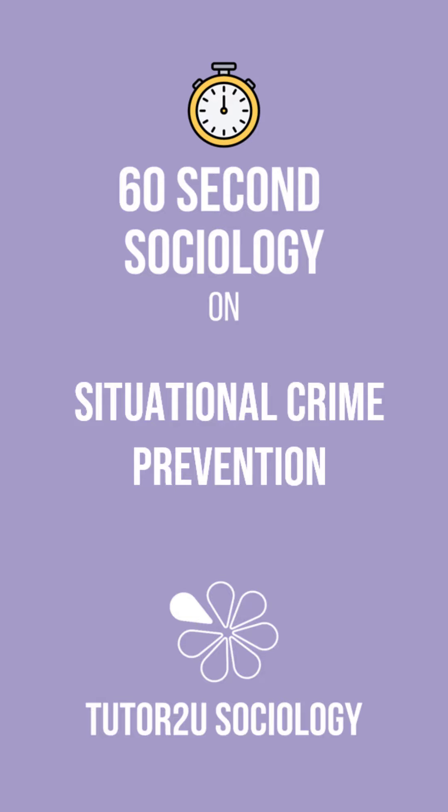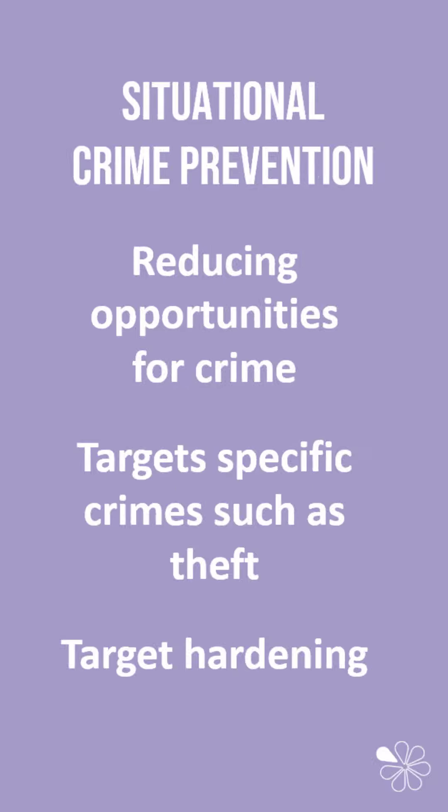In this 60 Second Sociology we're going to look at situational crime prevention. Situational crime prevention is based upon rational choice theories that suggest that individuals make a conscious decision to commit crime based upon the risk and reward.